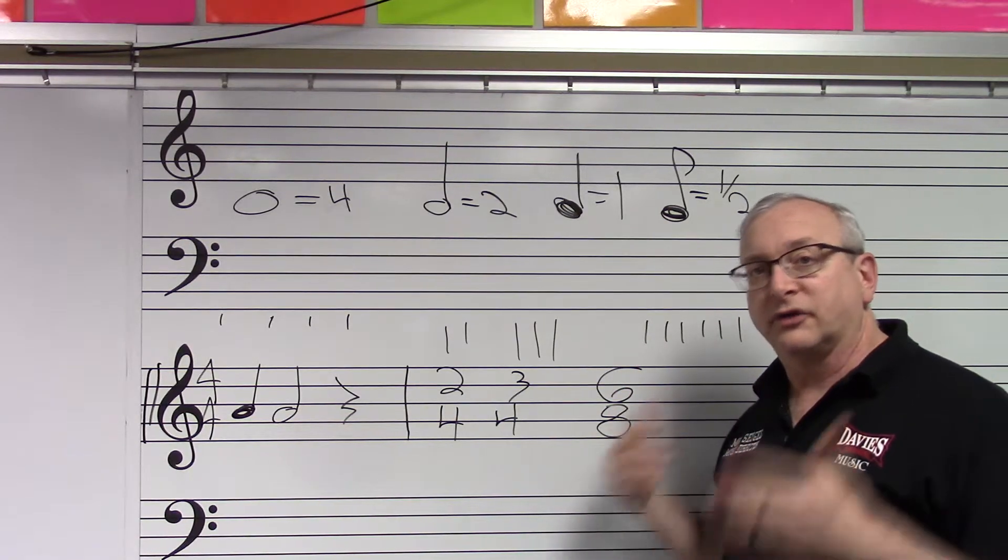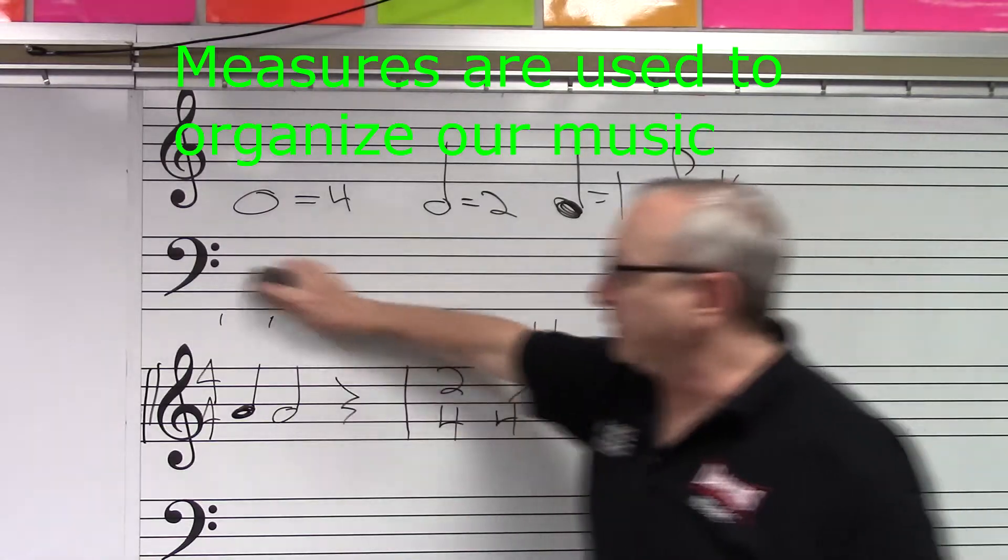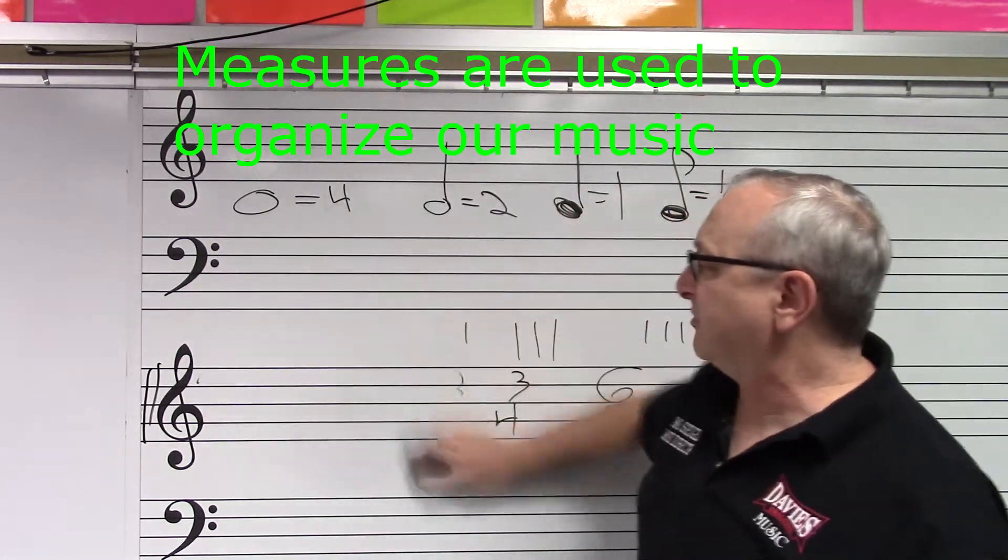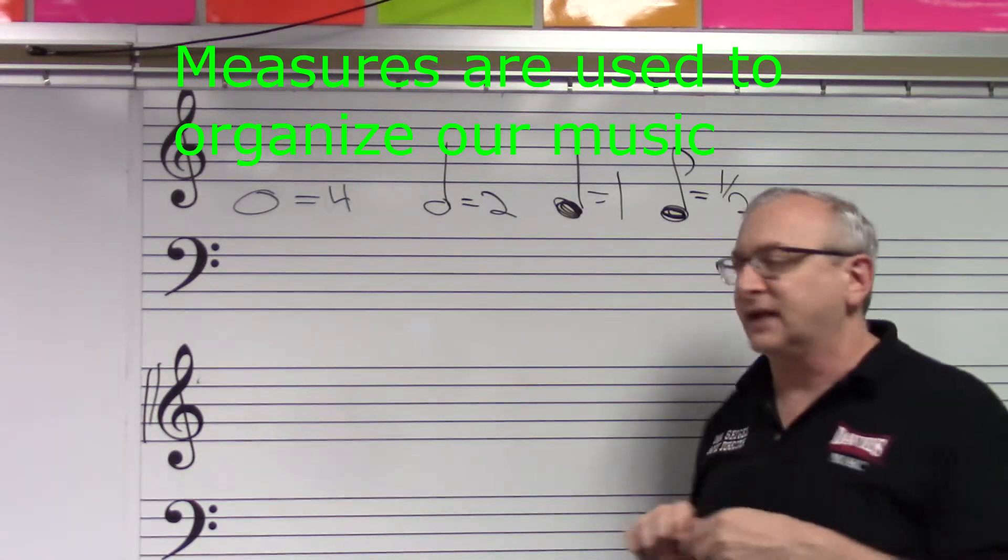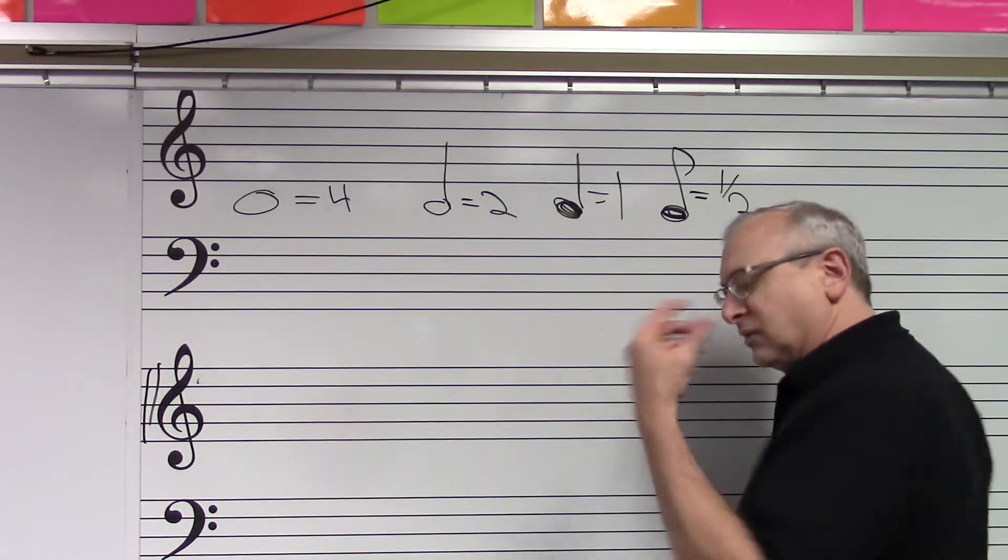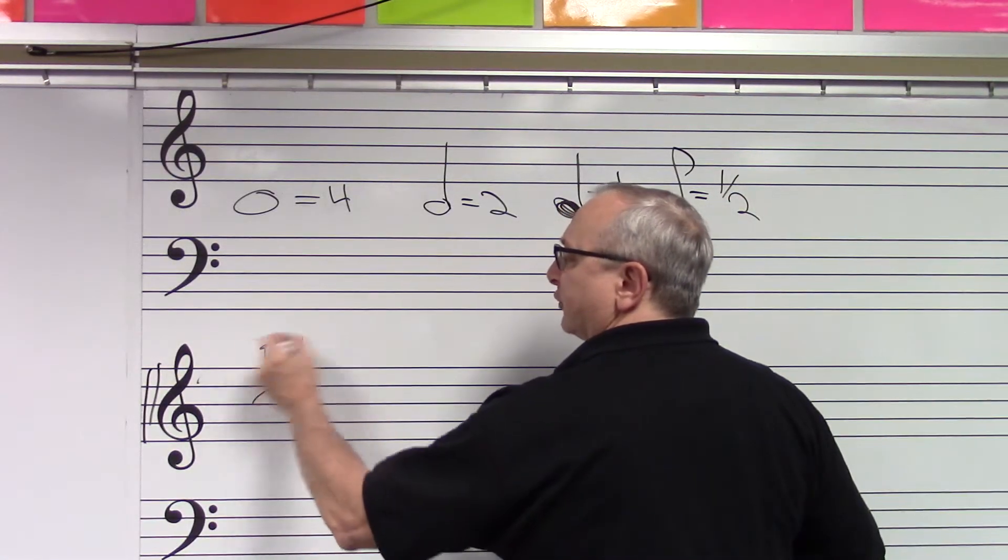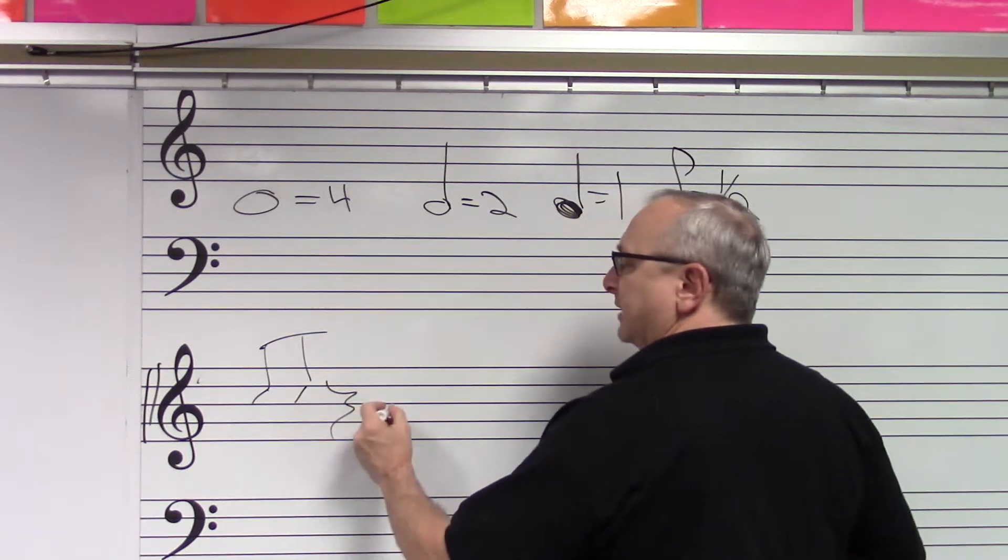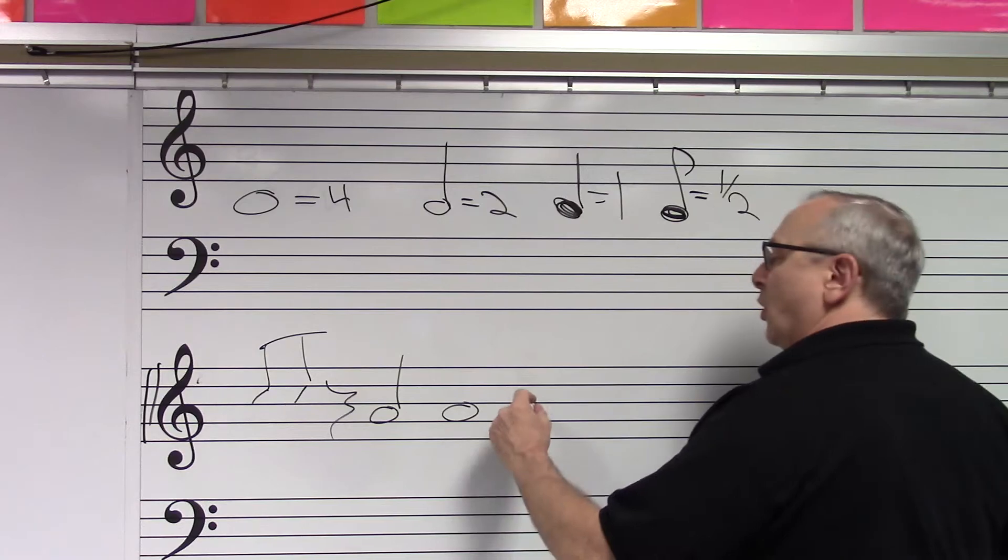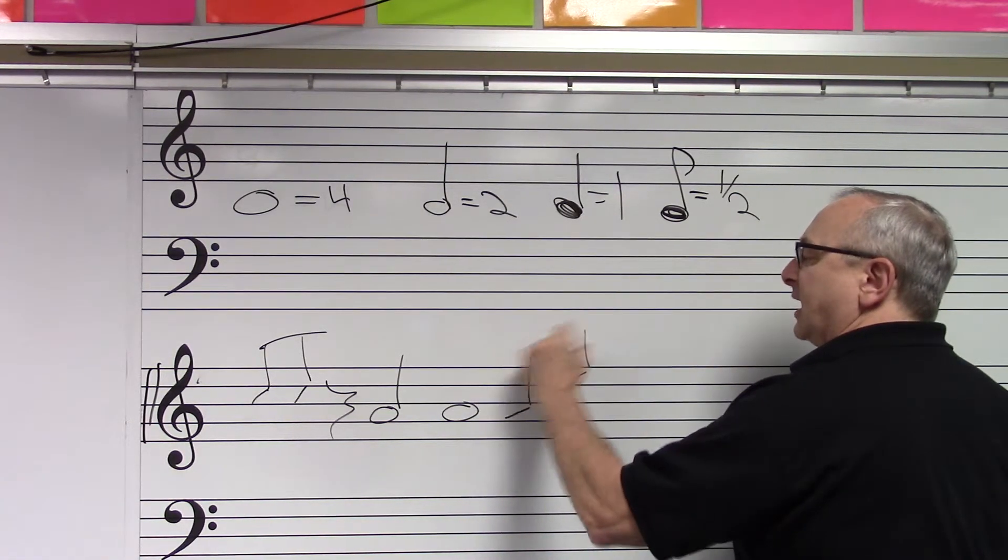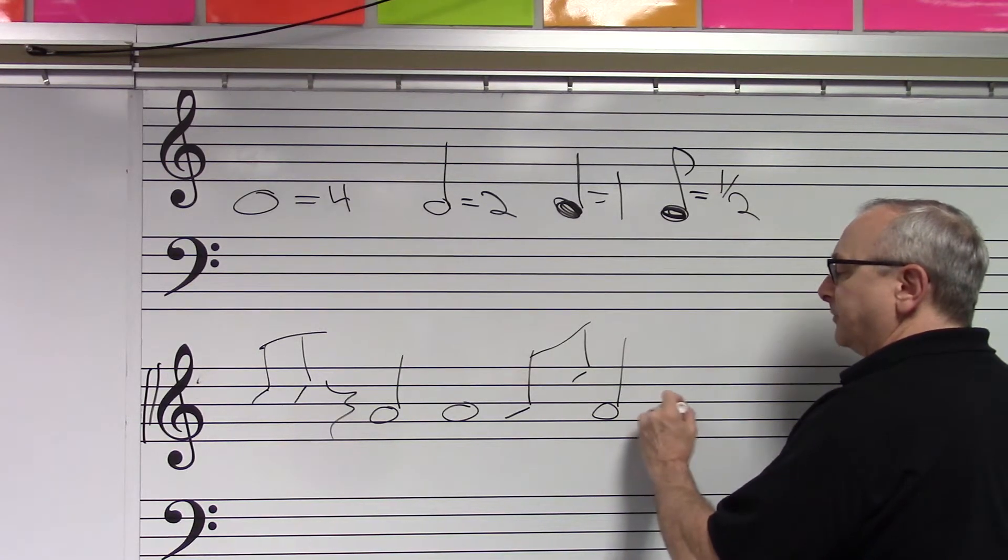So measures are simply an organizational tool. If I wrote music and I didn't have measures, it would be extremely difficult for our eyes to see, recognize, and interpret a whole bunch of music that just kind of goes on and on and doesn't have any kind of separation or organization to let our eyes get a sense of what the music is about.